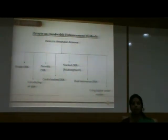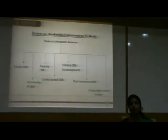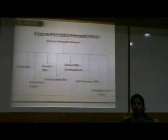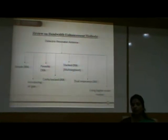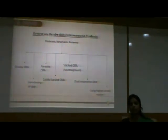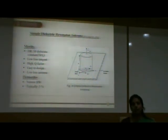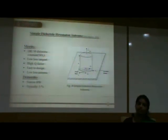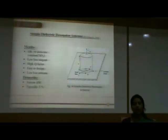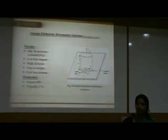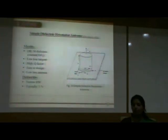These are the different bandwidth enhancement methods. Many researchers have contributed towards enhancement of the bandwidth of DRA. Some important methods include: the air gap method, parasitic DRA method, cavity-backed DRA method, stacked DRA, dual resonance DRA, and higher order mode DRA. This is a simple dielectric resonator antenna geometry proposed in 1983 by S.A. Long, in which a metal antenna is directly replaced by a dielectric resonator made up of TiO2, having a dielectric constant of 50, with low loss tangent and high Q factor. The demerit of this antenna design is its narrow bandwidth, which is typically only 5%.